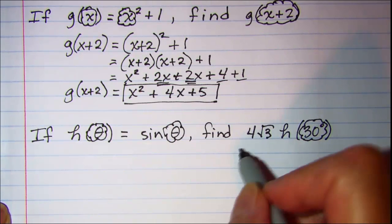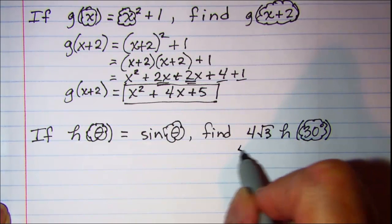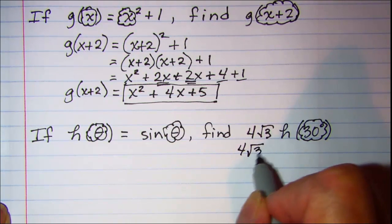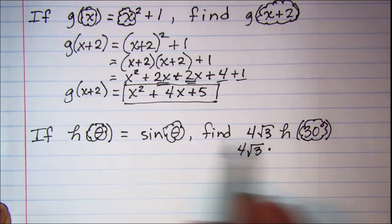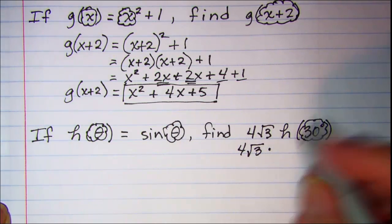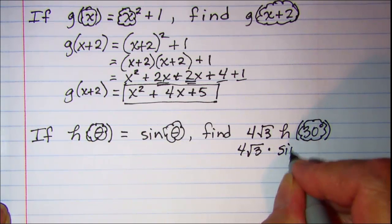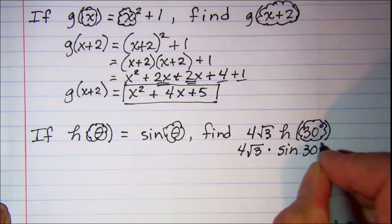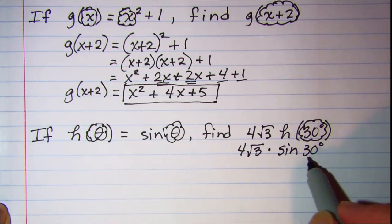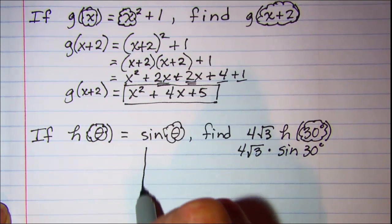So again we're going to substitute this argument into our function everywhere that we see a theta. So that means our problem then is 4√3 times sin(30). Now sine of 30 we can calculate, let's draw a reference triangle.